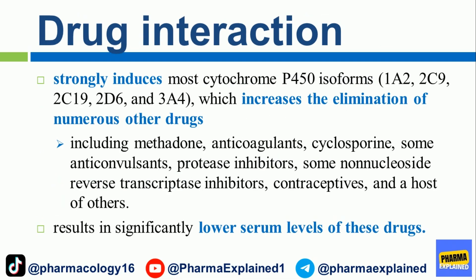Drug interaction: Rifampin strongly induces most cytochrome P450 isoforms — 1A2, 2C9, 2C19, 2D6, and 3A4 — which increases the elimination of numerous other drugs, including methadone, anticoagulants, cyclosporin, some anticonvulsants, protease inhibitors, some non-nucleoside reverse transcriptase inhibitors, contraceptives, and a host of others, resulting in significantly lower serum levels of these drugs.